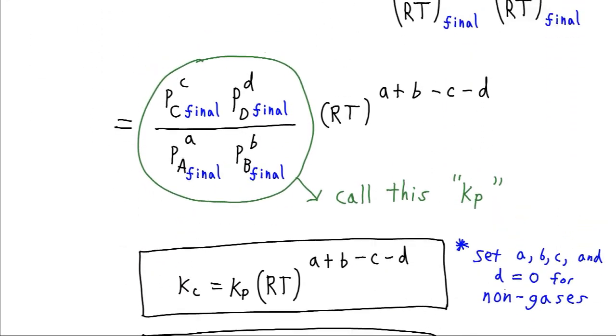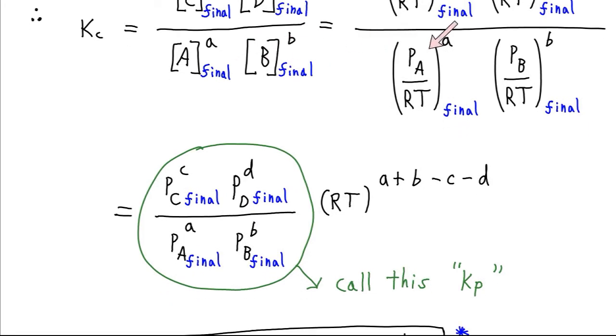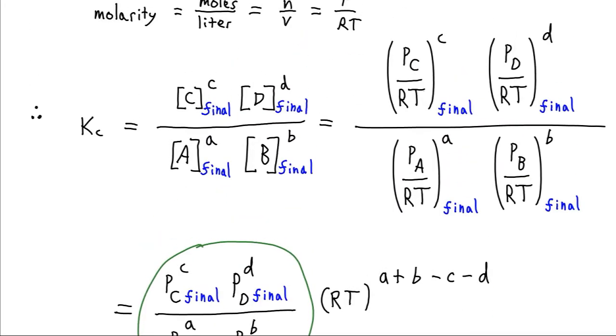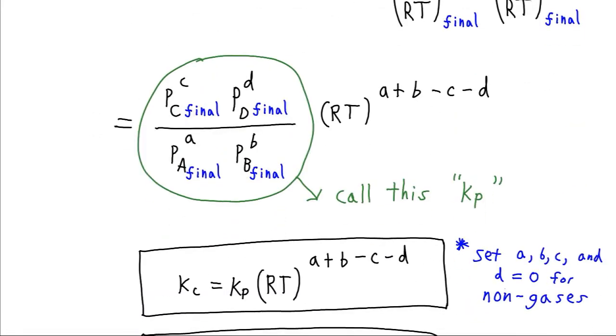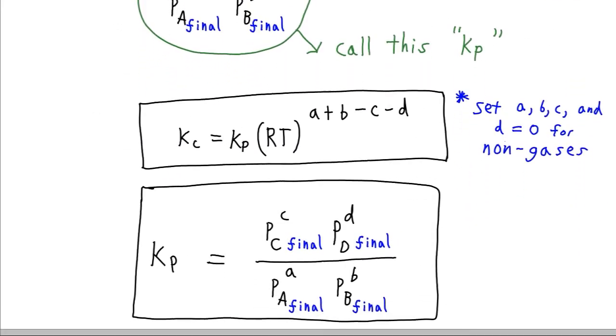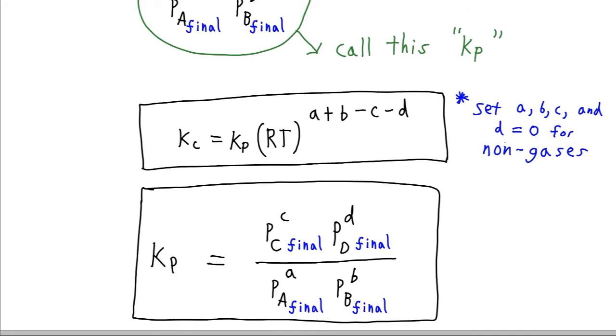And so our expression, if we substitute Kp for all these pressure terms, is Kc is equal to Kp times RT to the A plus B minus C minus D, where this is what Kp means.